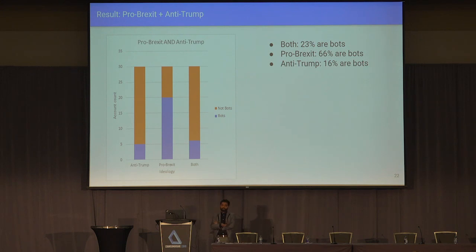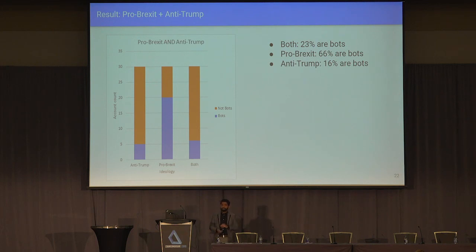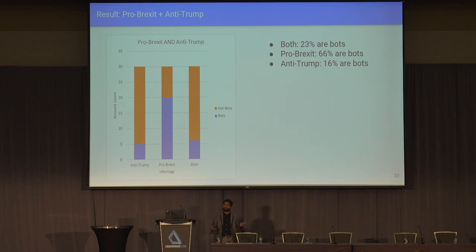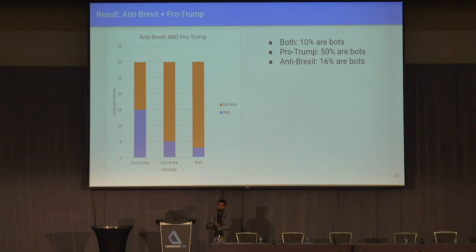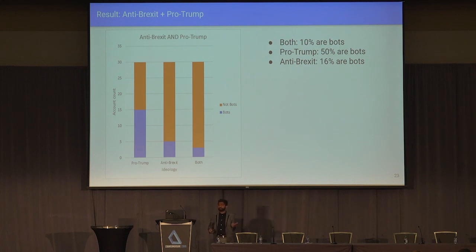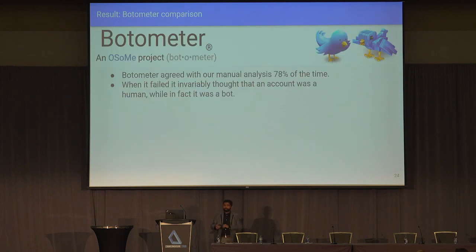So there's someone, some organization, or some nation state — attribution is not in my scope — pushing bot messages when it comes to these two ideologies and their combination. I then wondered what kind of person is pro-Brexit and anti-Trump, since right-wing people in one country tend to ally with right-wing in another. There was an intersection between anti-Trump and pro-Brexit, and 23% were bots. That's really interesting — maybe people actually are like that, but who is running an operation benefiting from both these ideologies? Similarly, 10% of anti-Brexit pro-Trump accounts were bots.